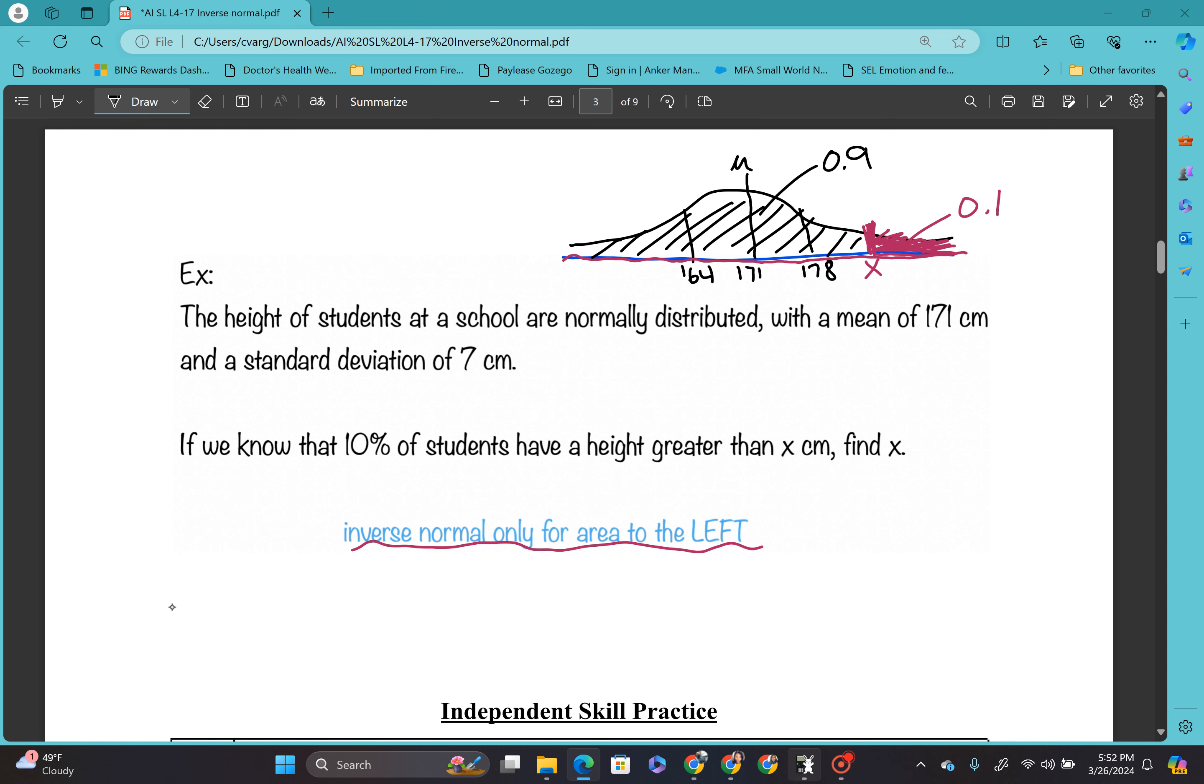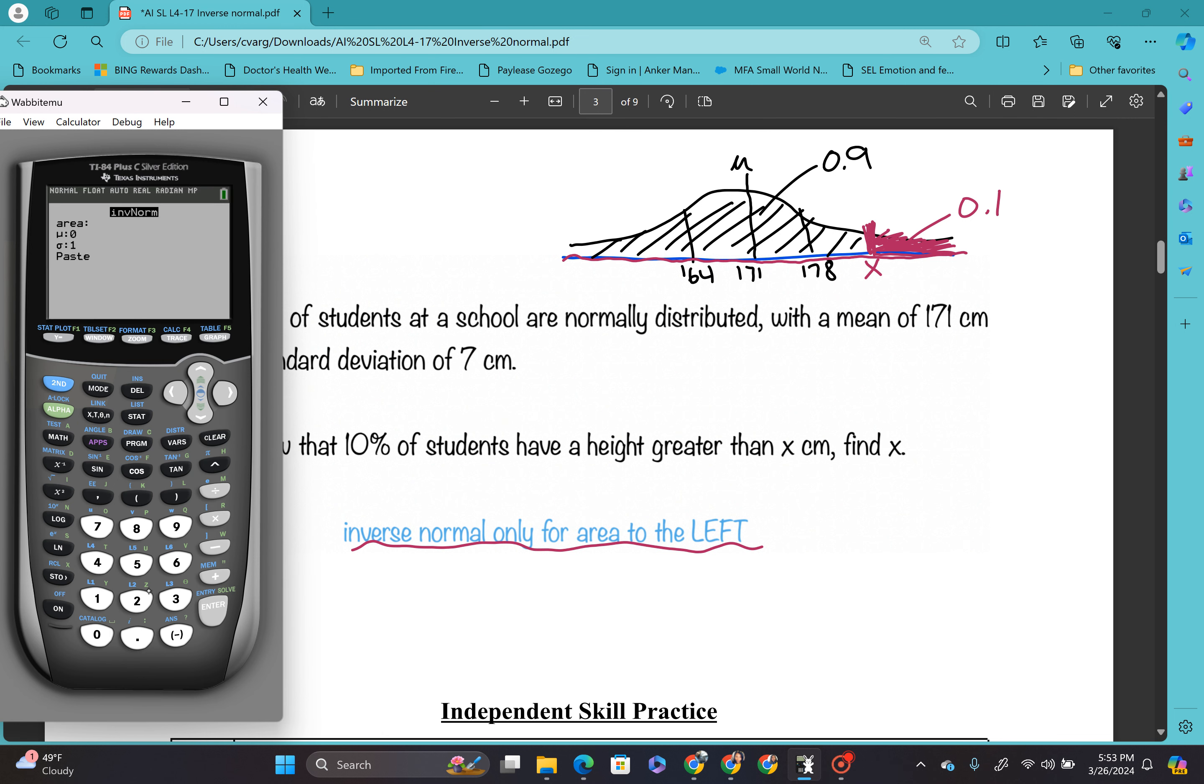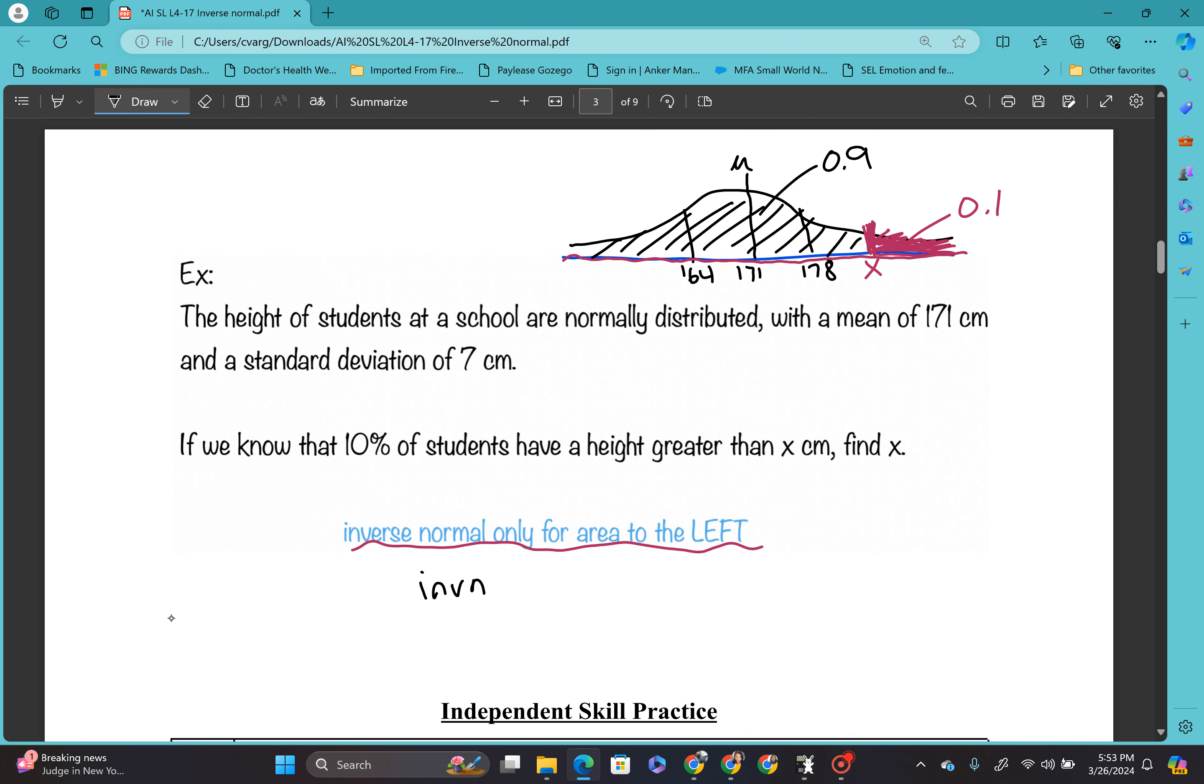So let's go to our calculator. Let's plug this in, vars. All right, so I have 0.9. I'm going to hit enter. Our mean is 171. I hit enter. And our standard deviation is 7. I hit enter until it gives me an answer. Perfect. So we have 179.97. So let's write this down. Inverse norm. We plugged in 0.9, 171, 7. And we got our answer as about 180. And this is centimeters.